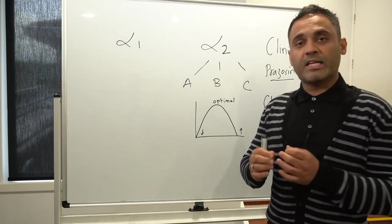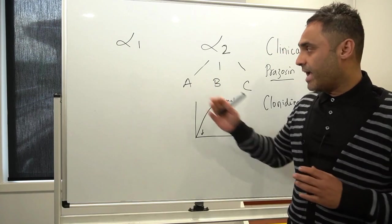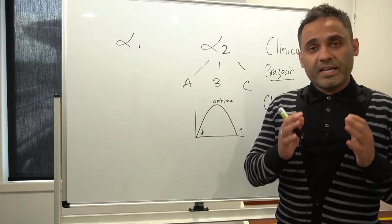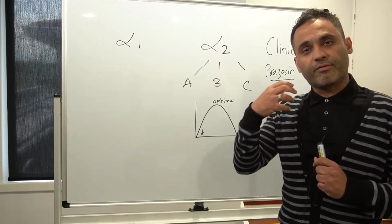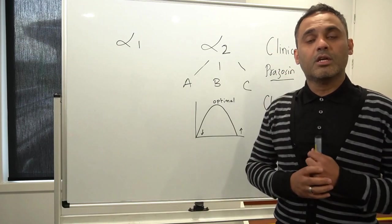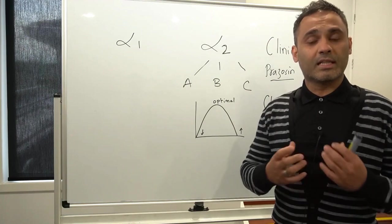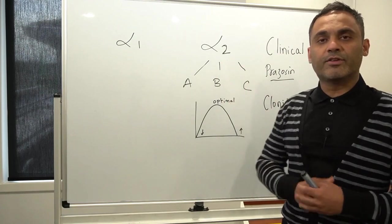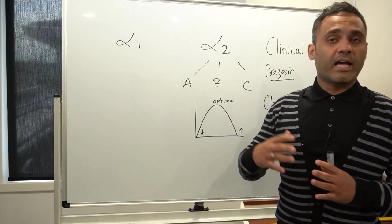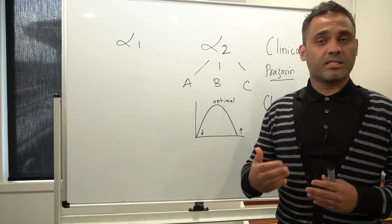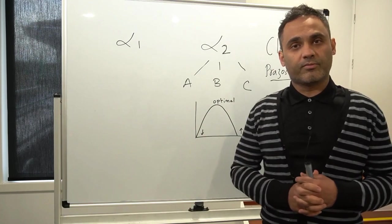When we compare that to guanfacine, guanfacine is also an alpha-2A agonist but it is predominantly an agonist at the post-synaptic receptor, so therefore essentially strengthens prefrontal cortex connectivity by increasing noradrenaline levels. There are some other alpha-2 agonists as well - tizanidine that's used in muscle spasticity and some in anesthesia as well which I won't cover here today as it's outside the field of my expertise.